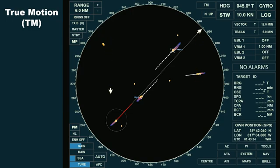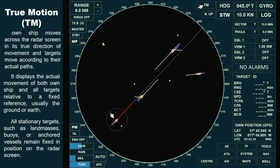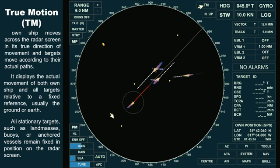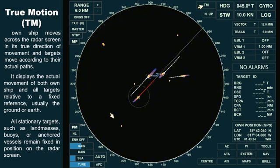In true motion, own ship moves across the radar screen in its true direction of movement, and targets move according to their actual paths. It displays the actual movement of both own ship and all targets relative to a fixed reference, usually the ground. All stationary targets, such as land masses, buoys, or anchored vessels, remain fixed on the radar screen.